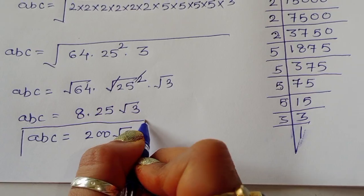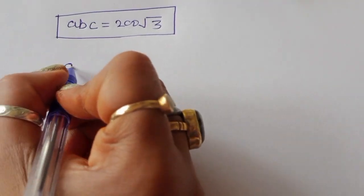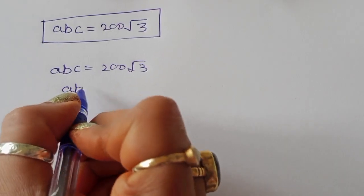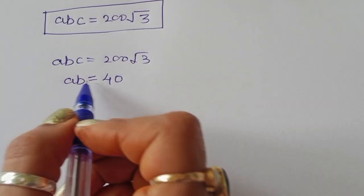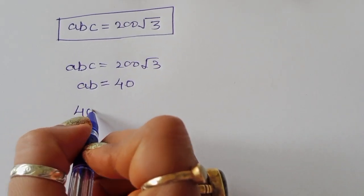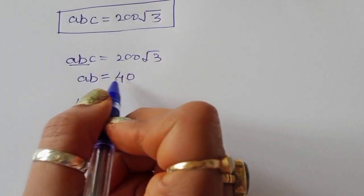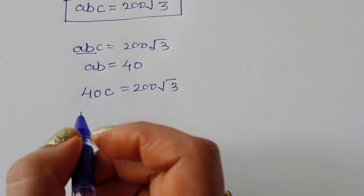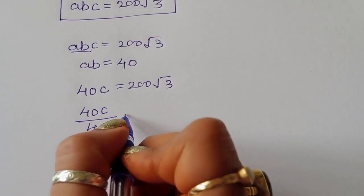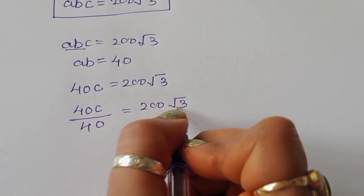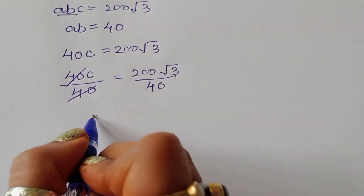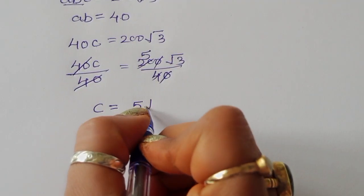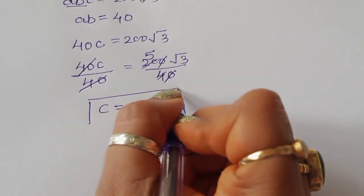Now we find the individual values. From equation one, ab = 40, so abc = 40c = 200√3. Dividing both sides by 40, c = 200√3 ÷ 40 = 5√3. So c = 5√3.